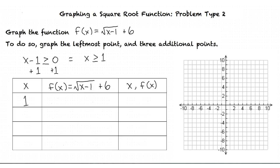First, we plug in 1 for any x variables, and are left with f of 1 equals the square root of 1 minus 1 plus 6. 1 minus 1 equals 0, and the square root of 0 is 0. So doesn't f of 1 equal 6? You're correct, which means our leftmost point is 1 comma 6.